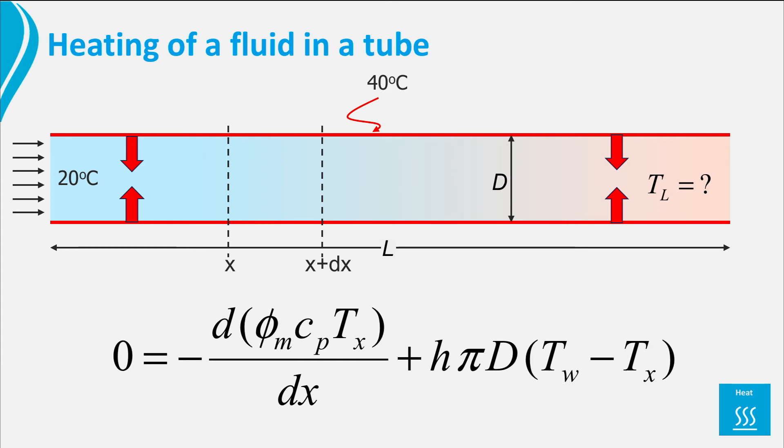We know that the wall temperature is 40 degrees C and that the temperature of the water at the entrance of the pipe, that means that x is zero, is equal to 20 degrees C. With these boundary conditions we can solve the differential equation and obtain an expression for the temperature T(x) at a distance x from the pipe entrance.